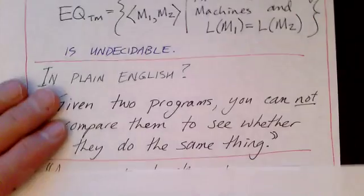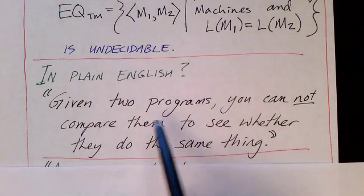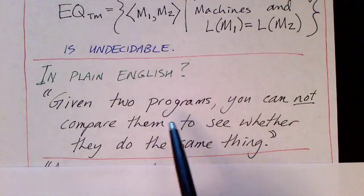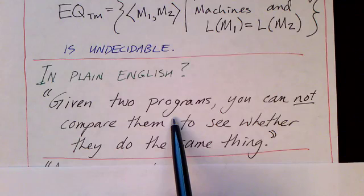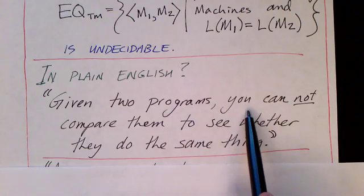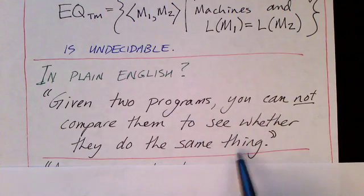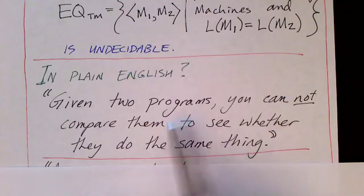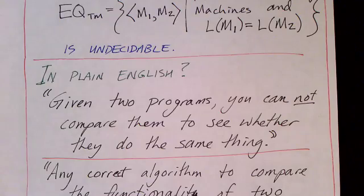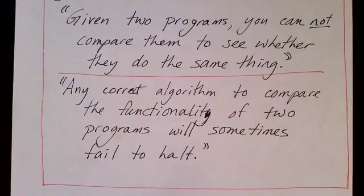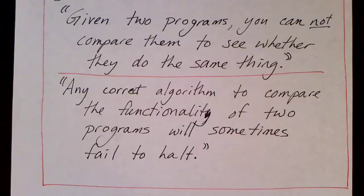In plain English, what is this theorem saying? Remember the Church-Turing thesis — the idea that a Turing machine accurately captures the idea of an algorithm. Given two programs or two algorithms, you cannot compare them to see whether they will do the same thing. In general, any algorithm to compare two programs might not itself terminate. Any correct algorithm to compare the functionality of two programs will sometimes fail to halt. The problem is undecidable.